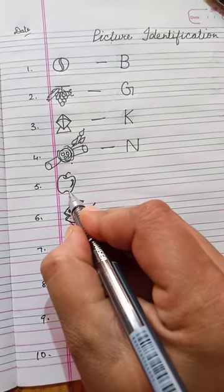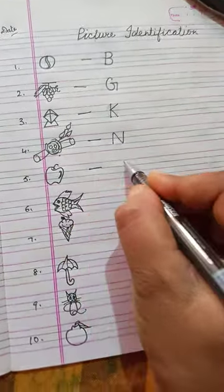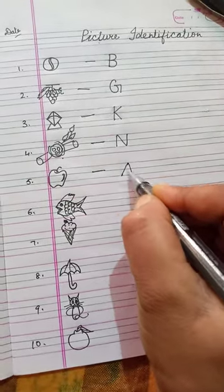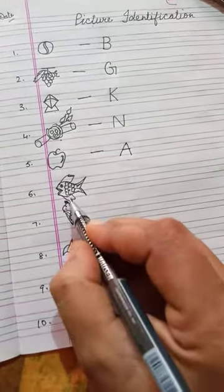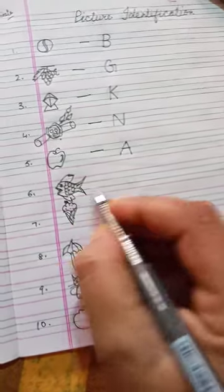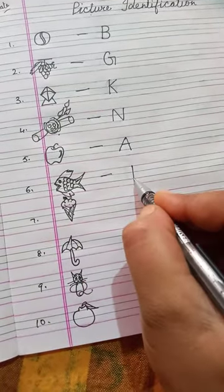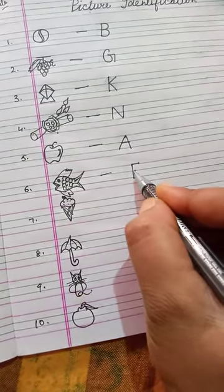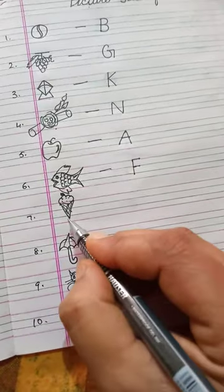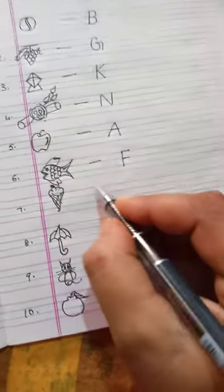A for apple. F for fish. I for ice cream.